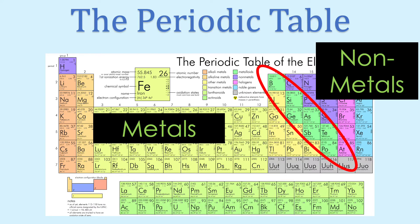The elements to the left of the staircase are metals, while the elements to the right of the staircase are nonmetals. The elements along that division, those green elements on your screen, are also known as metalloids. They contain properties of both metals and nonmetals.